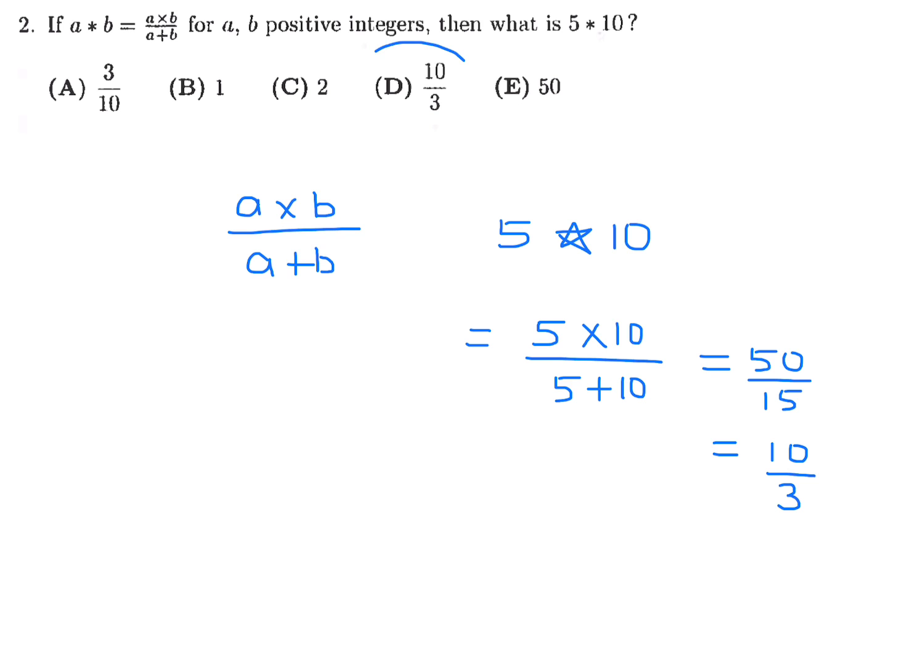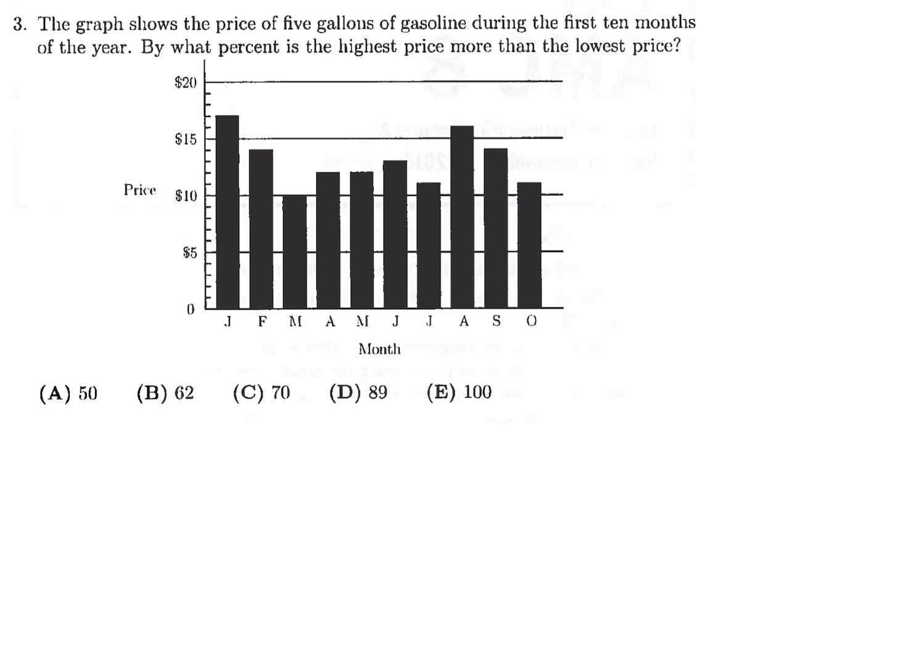So number 2, the answer is D. The graph shows the price of 5 gallons of gasoline during the first 10 months of the year. By what percent is the highest price more than the lowest price? Well, the highest price is this guy right here, and that looks like it's 17. The lowest price is this one, and that one is 10. So we have to compare 17 to 10. So 17 minus 10 divided by 10, which is 7 over 10, and that is 70 percent. So 17 is 70 percent greater than 10.